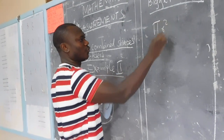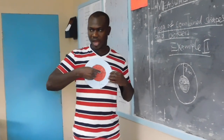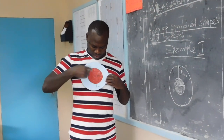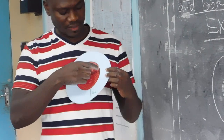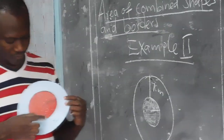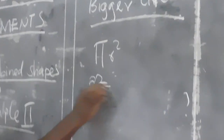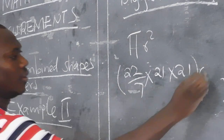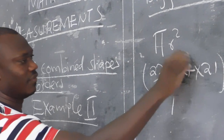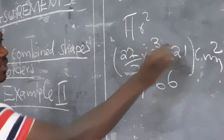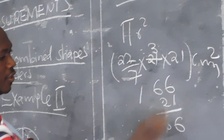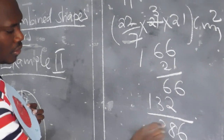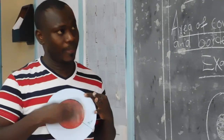The area uses pi r squared. The smaller circle has a radius of 14 and the outer margin is 7, so the radius of the bigger circle is 7 plus 14 equals 21. So we have 22 over 7 multiplied by 21 by 21, which gives us 1386 square centimeters. That is the area of the whole figure including the shaded part.